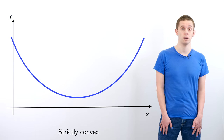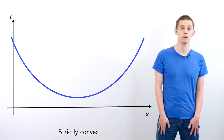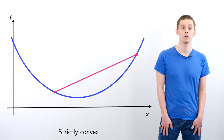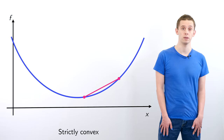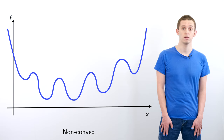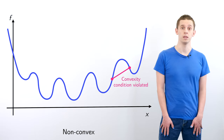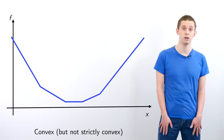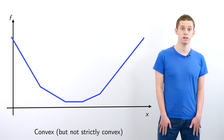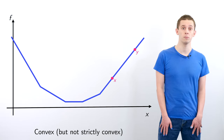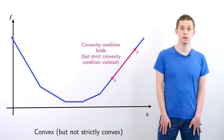Let's take a look at a few different examples. A parabola is strictly convex, and any chord drawn between two points will be above the parabola. A non-convex function will have a chord that lies below the function. A function made of line segments will be convex but not strictly convex — if we choose two points x and y on the same line segment, the strict inequality in the strictly convex definition will be violated.